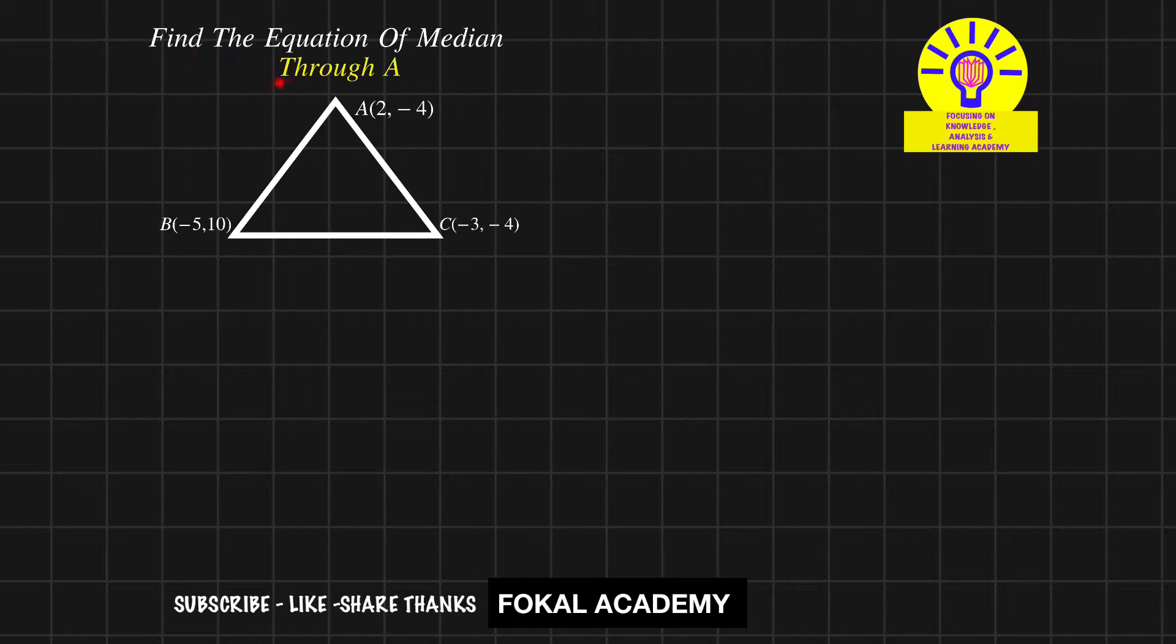In this problem, find the equation of a median line which passes through point A. Here a triangle is given with three vertices: A is (2, -4), B is (-5, 10), and C is (-3, -4).